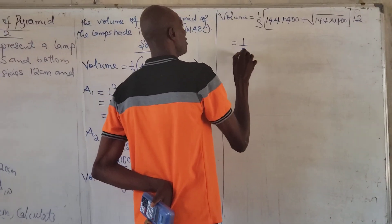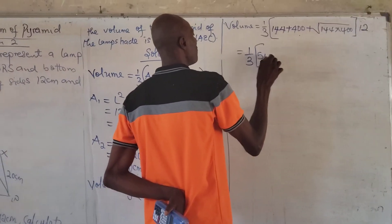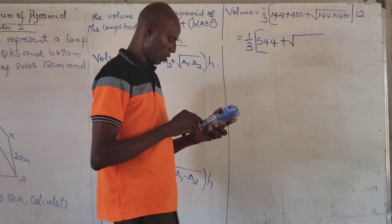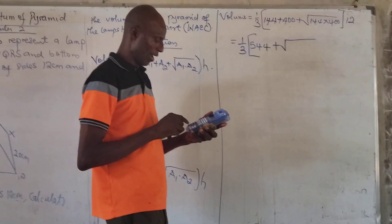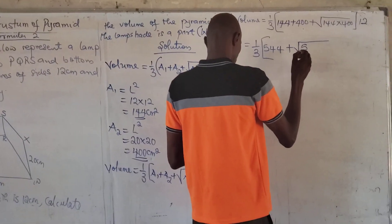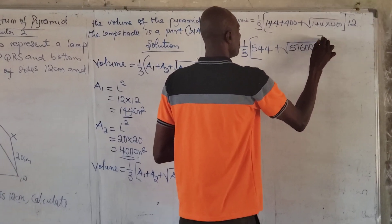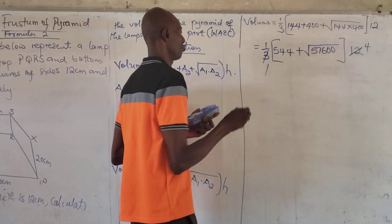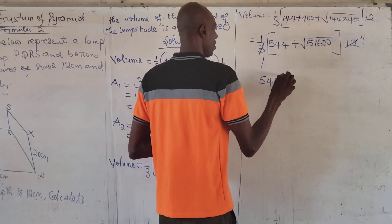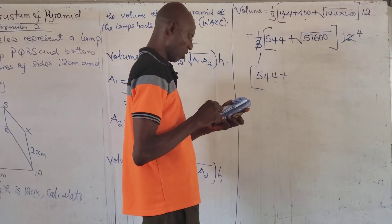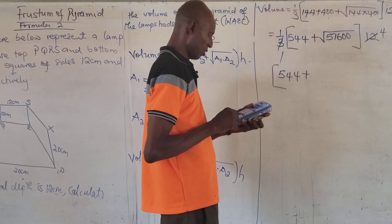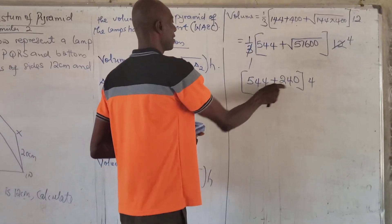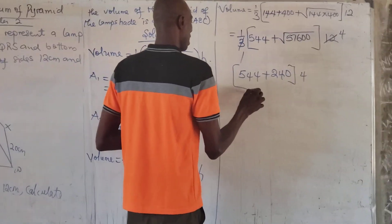So now it is 1 over 3 times: 144 plus 400 is 544. Then let's find the product of 144 times 400, which gives us 57,600. The square root of 57,600 gives us 240. So we have 544 plus 240, times 12.